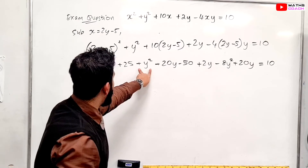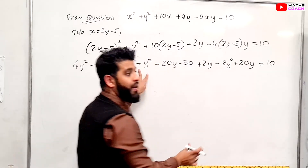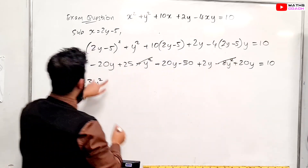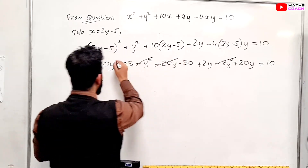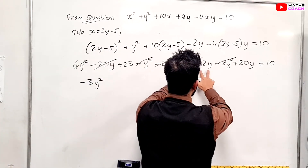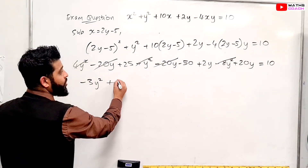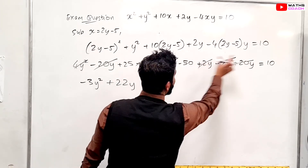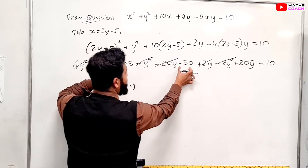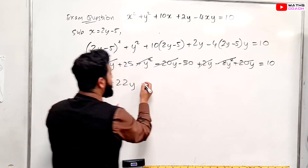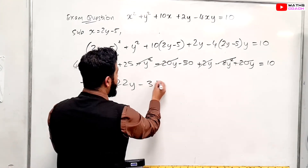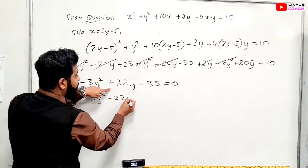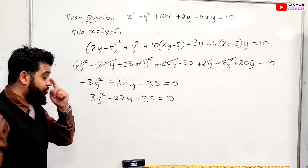Collecting like terms: 4y² and y² and -8y² give 5y² - 8y² = -3y². The -20y and +20y cancel. Then +2y and +20y give +22y. For constants: 25 - 50 = -25, then moving the 10 over gives -25 - 10 = -35. So we have -3y² + 22y - 35 = 0.